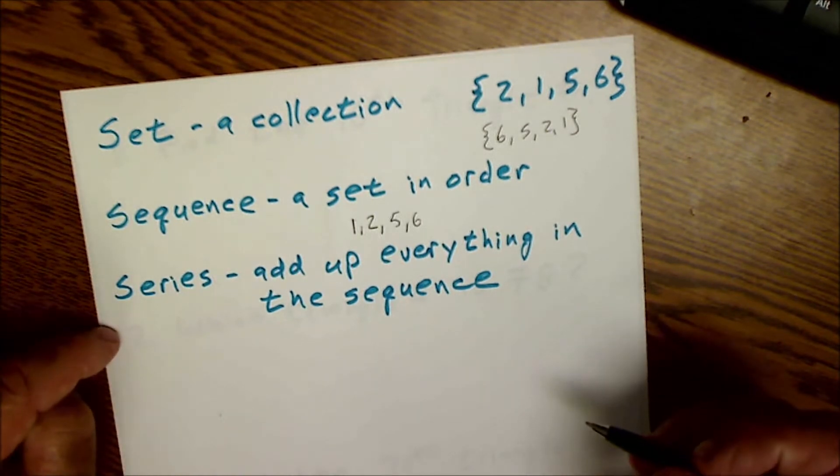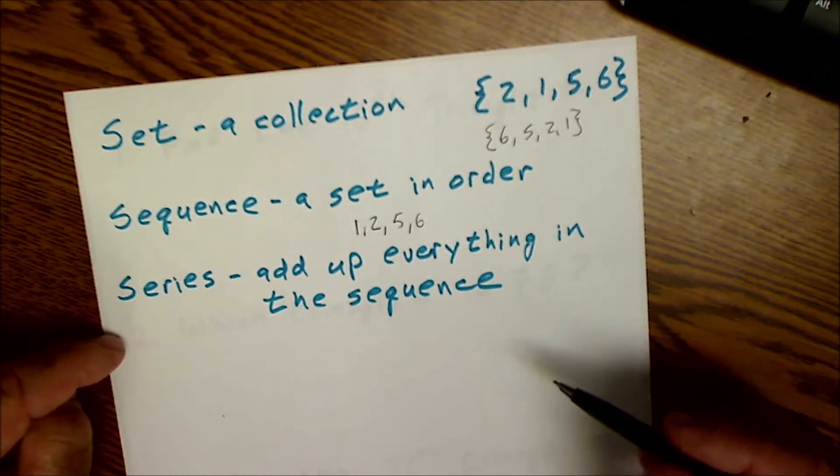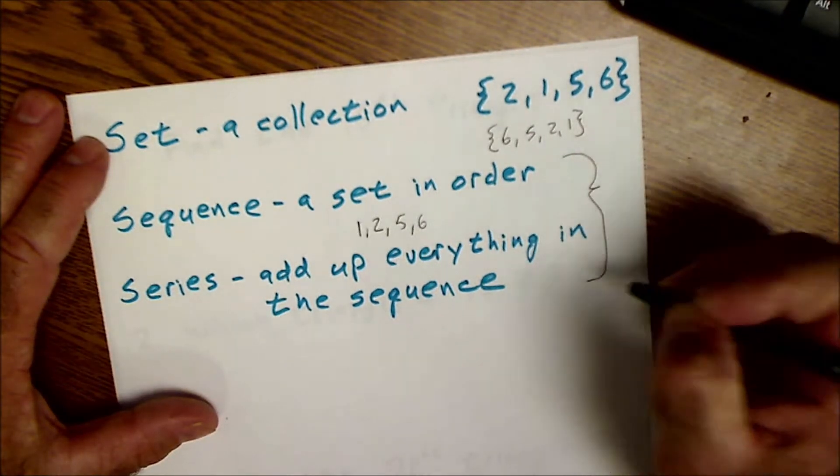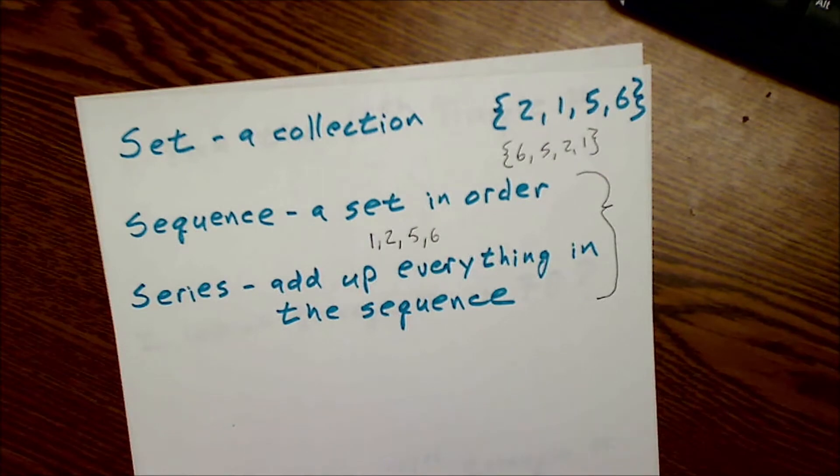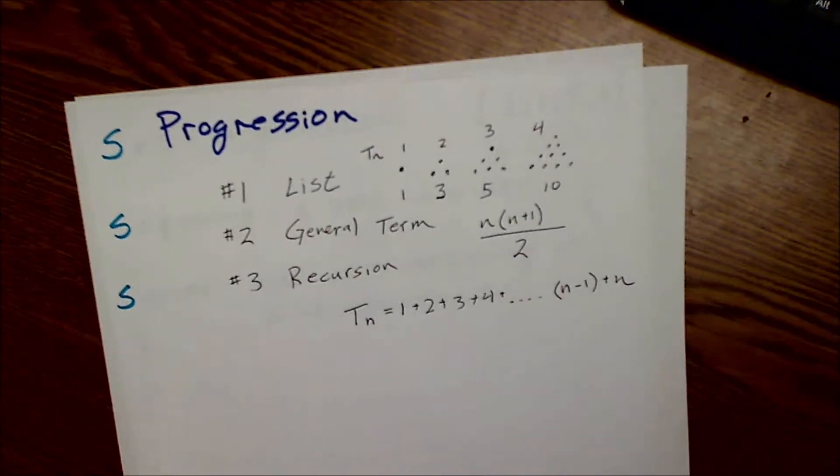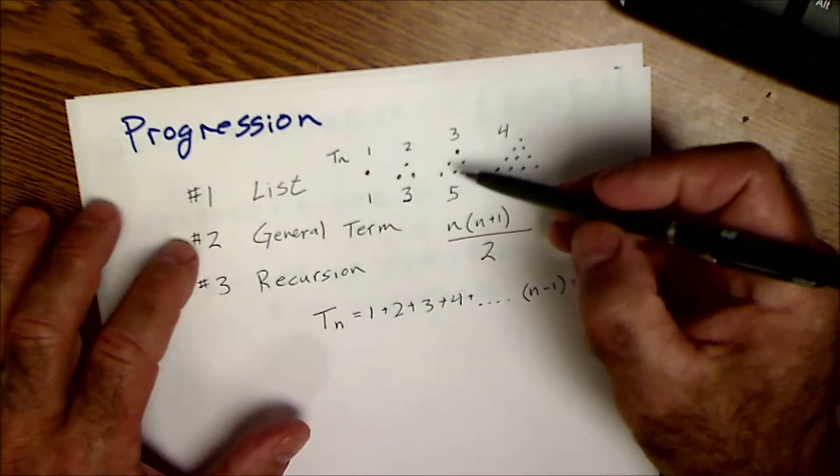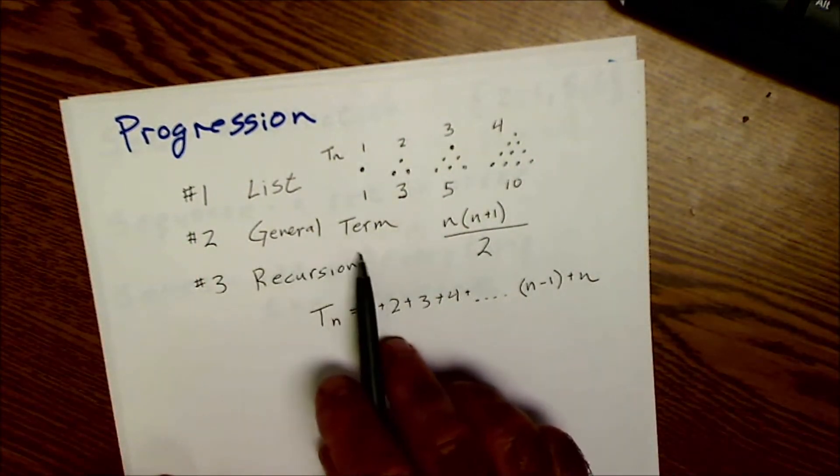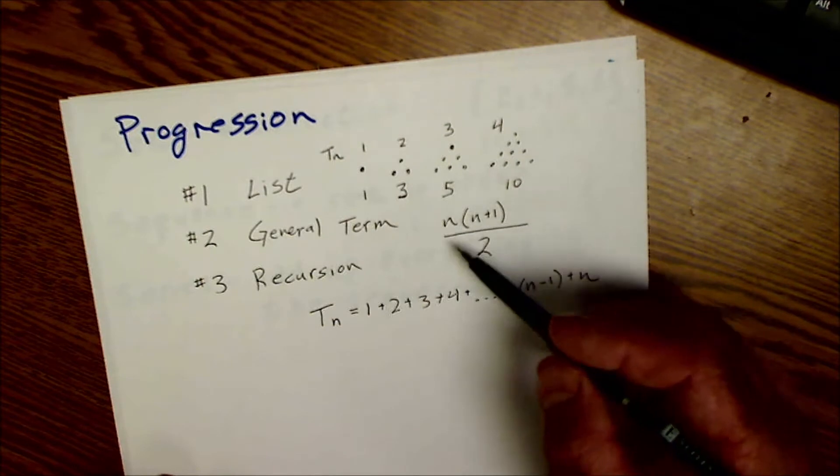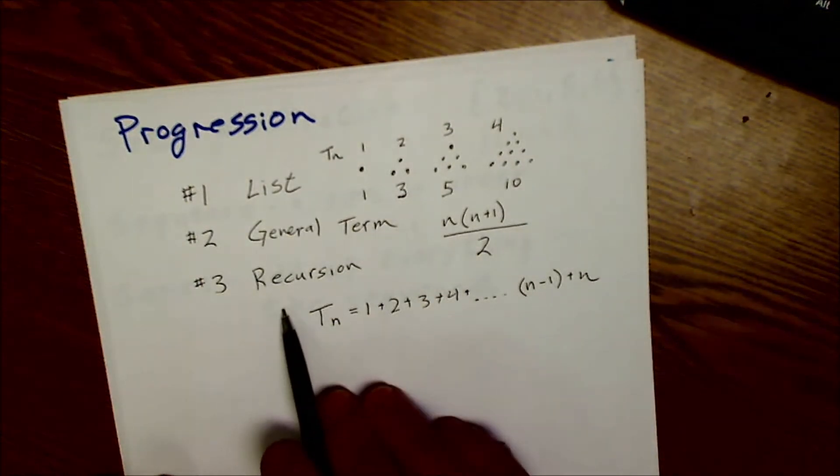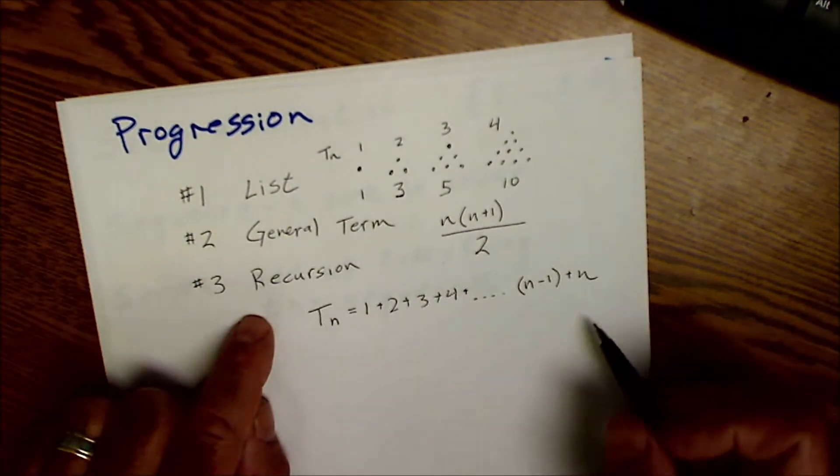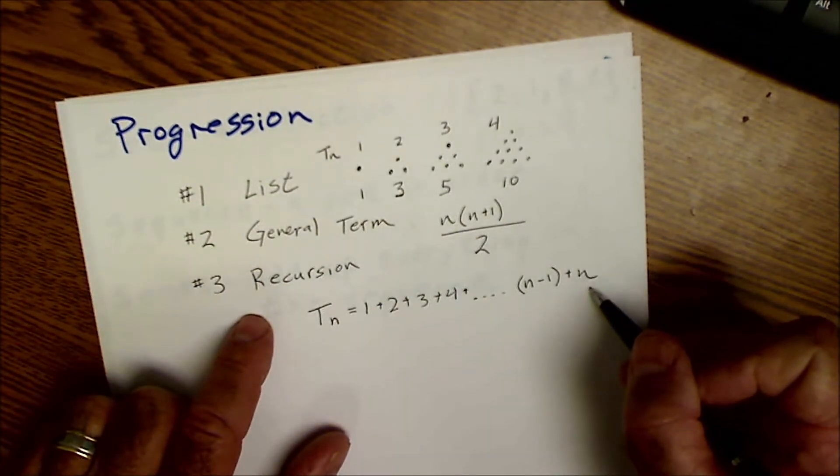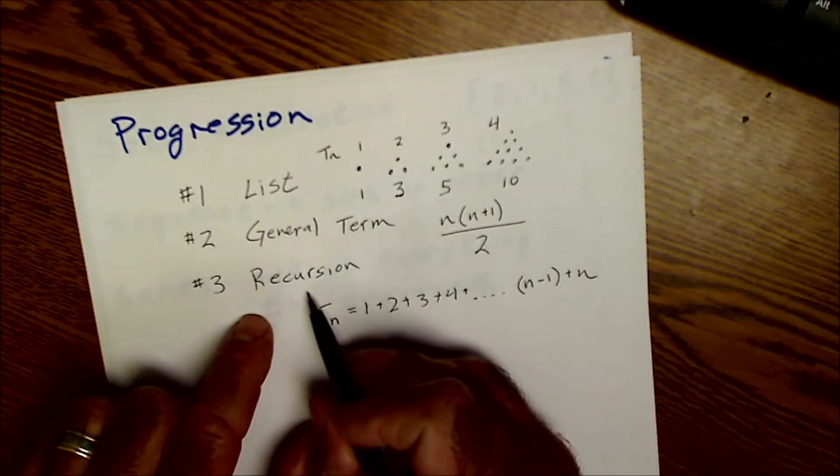And these are really big ideas when you get to calculus and you're looking at integration. These two things, both the sequence and series, are called a progression and there's three ways to represent progression. The first way is just a list. The second way is in terms of the general term, the value in the list, the number in the list. And then the third way is a recursion where you're kind of creating a list and a value based on previous values. That's what a recursion means.